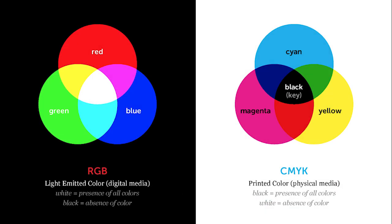The two color modes you see on the screen are the two most predominant in the programs we're going to be using. There is one other color mode called grayscale, which we'll talk about in a minute. But RGB and CMYK are two that you absolutely must understand the difference between. There will be more on color from other resources during the semester, but before we get into Illustrator, Photoshop, InDesign, and Premiere, let me explain the difference between these two color systems.